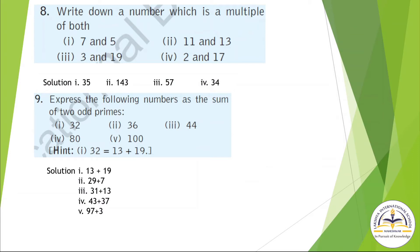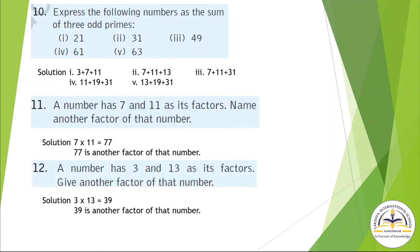Question Number 9: Express the following numbers as the sum of two odd primes. For 32, you can write 13 + 9. This is our answer. For 36, you have to write the sum of two odd primes. Question Number 10: Write sum of three odd primes. Question Number 11: A number has 7 and 11 as its factors. When you multiply 7 and 11, you get 77 — another factor of that number. Question Number 12: A number has 3 and 13 as its factors. Multiply 3 and 13, you get 39 — another factor of that number.